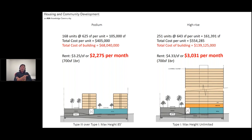So when a developer looks at a site, they consider how much they can charge, what it's going to cost to build, and the degree of confidence that consumers can pay the rent. Coming out of the recession in 2012–2013, not many people had confidence there were enough people who could afford over $3,000 per month for a one-bedroom. Developers went with the less risky project, and investors were risk-averse after the downturn.